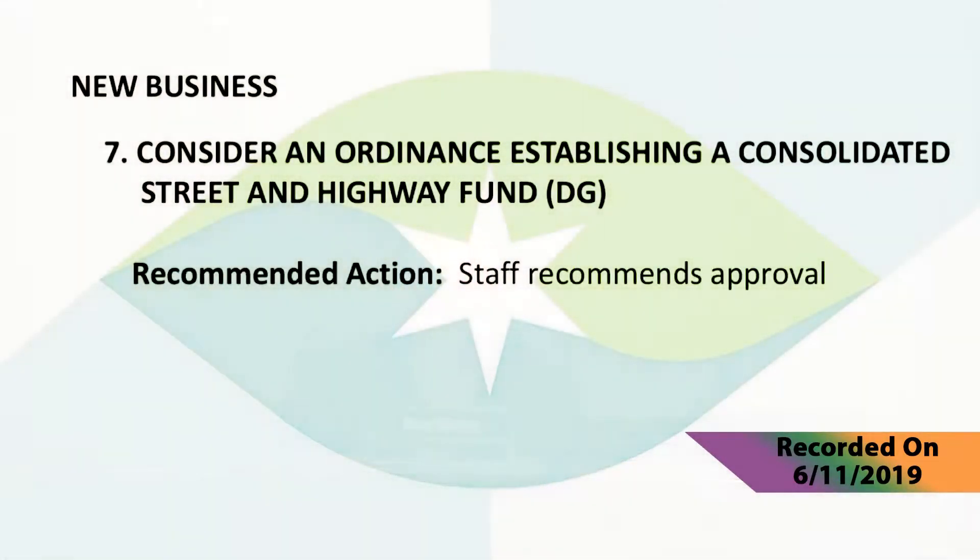That brings us to item seven, considering an ordinance establishing a consolidated street and highway fund. The city currently budgets street maintenance in two different funds — the street department within the general fund and the special streets and highway fund. This creates difficulty in budgeting, as expenditures must be strategically allotted to avoid overspending one budget. Under Kansas statutes, cities are allowed to adopt an ordinance to combine street funding and expenditures into one consolidated fund. Consolidation would eliminate the need for staff to determine which budget to charge for any particular item. Since state gas tax revenue is insufficient to fund all street maintenance, a transfer from the general fund to the consolidated fund would be budgeted annually. The transfer would not cost the city any additional money.